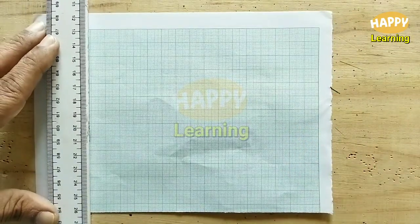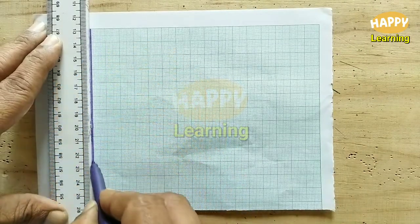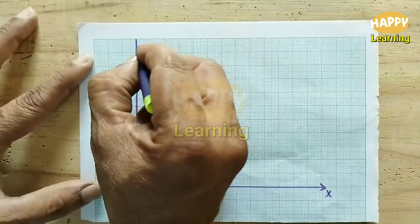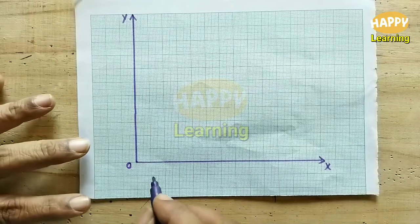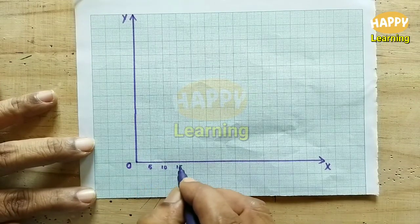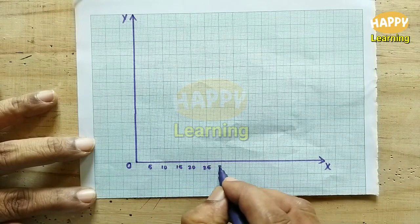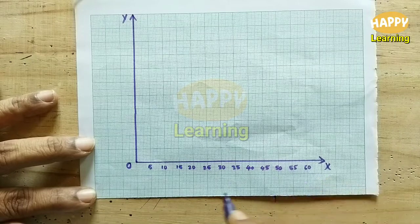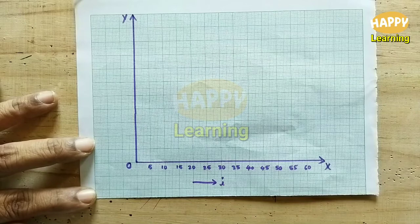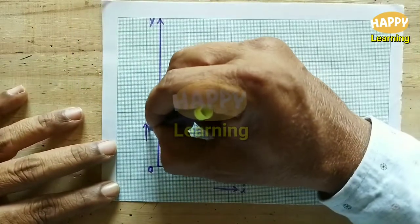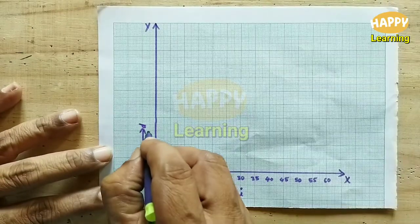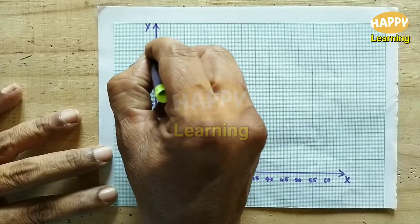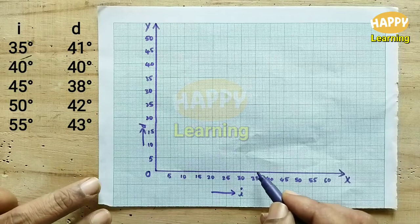Now take a graph paper and draw the X and Y axes. For clear visibility a sketch pen is used here, but you should use pencil only. Take the angles of incidence on the X-axis: 5, 10, 20, 25, 30, 35, 40, 45, 50, 55, 60 degrees. On the Y-axis, take the angle of deviation D: 5, 10, 15, 20, 25, 30, 35, 40, 45, 50 degrees. Now note down the points.